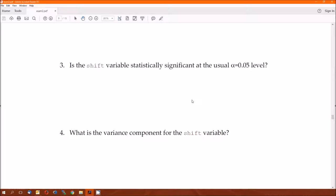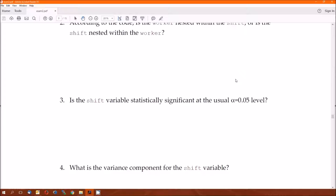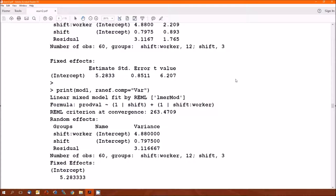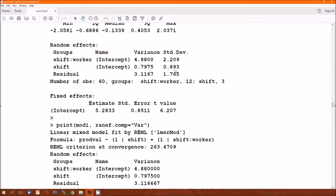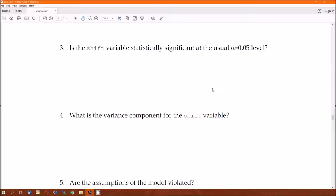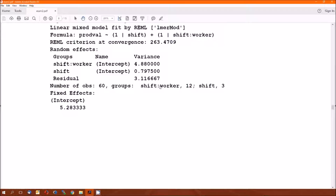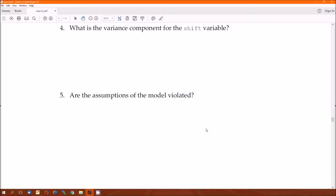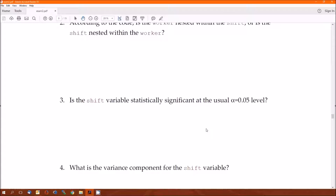Three: is the shift variable statistically significant at the usual alpha 0.05 level? The answer is I have no idea. I can't tell from this. I've got the variance. I've got the standard deviation. That's really all I've got. So cannot tell from the output. Variance component for the shift variable. I think everybody got this. The variance component is 0.7975. Obvious is good in output.